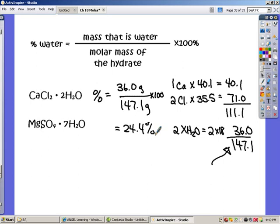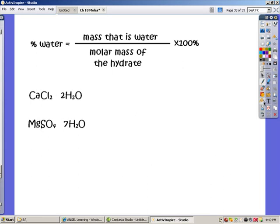Okay, how'd you do? I bet you did just fine. Did you start out by calculating the molar masses of the magnesium sulfate heptahydrate? Well, we have one magnesium. That's 24.3. And we have one sulfur. That's 32.1.